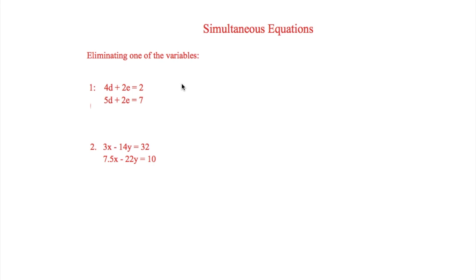The first thing to look at is when you eliminate one of the variables — this is slightly easier, but we will see a difficult example in number two. So the first example is 4d plus 2e equals 2, and 5d plus 2e equals 7. You can already see that both equations have a 2e, which means you'll want to subtract one from the other. Since one is 5d plus 2e and the other is 4d plus 2e, you subtract to get 5d minus 4d.